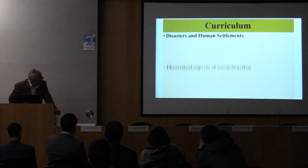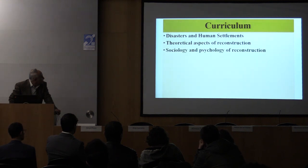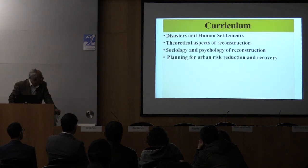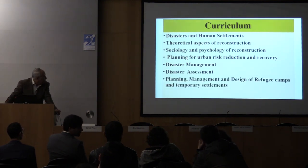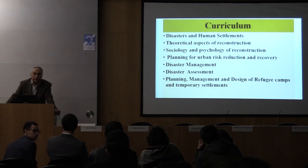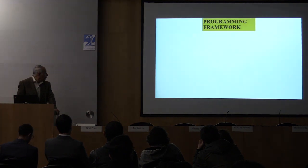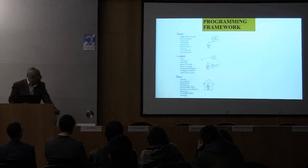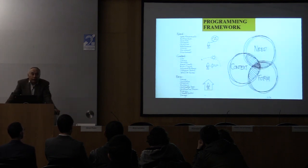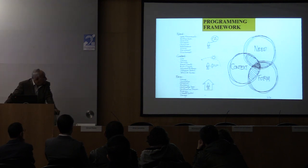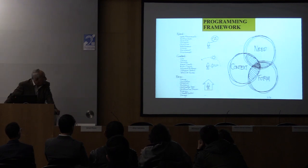Our courses include: Disaster and Human Settlement, Theoretical Aspects of Reconstruction, Sociology and Psychology of Reconstruction, Planning for Urban Risk Reduction and Recovery, Disaster Management, Disaster Assessment, Planning, Management and Design of Refugee Camps, and Temporary Settlement — just some of the courses offered to master's students. After a disaster, people who are homeless have needs within a context, and are required to be sheltered in some form. We try to understand what the needs are, the context of the damaged area, and which form of shelter is appropriate.